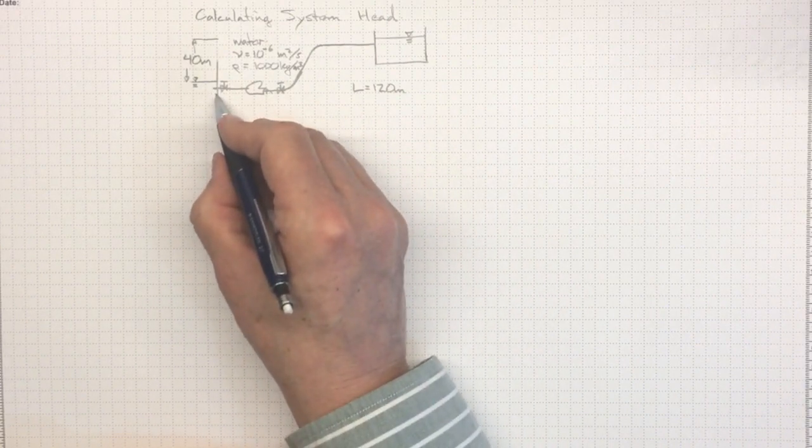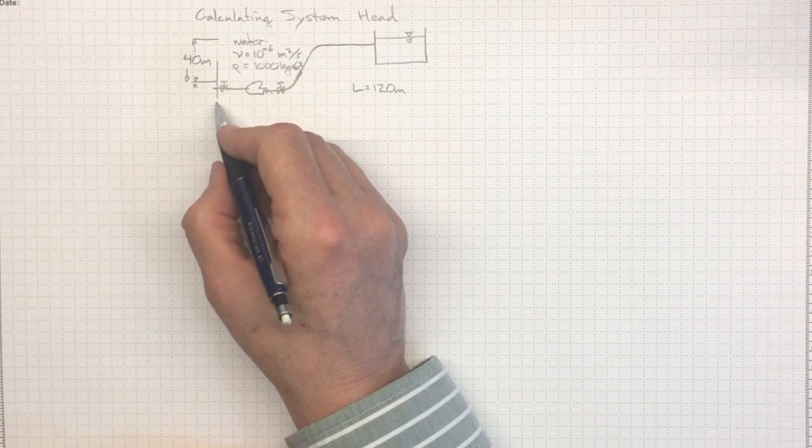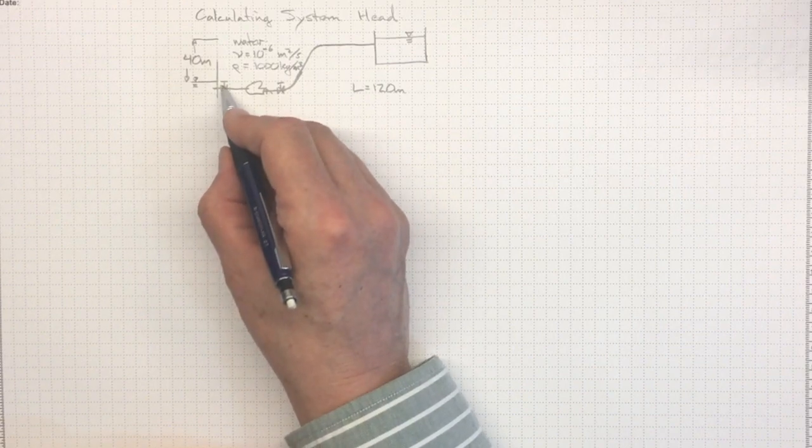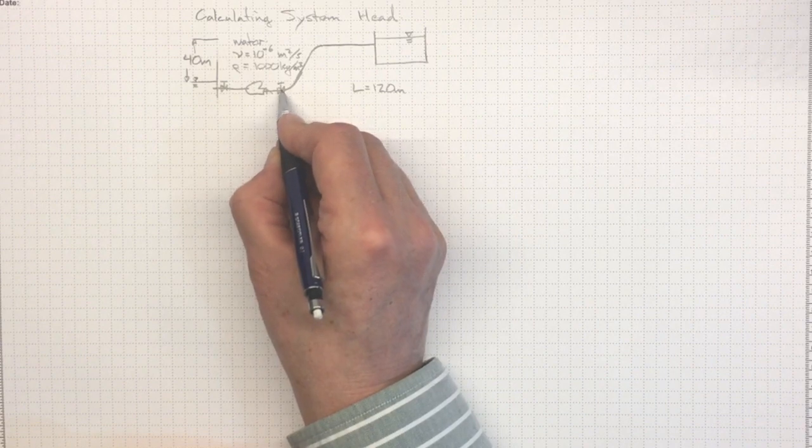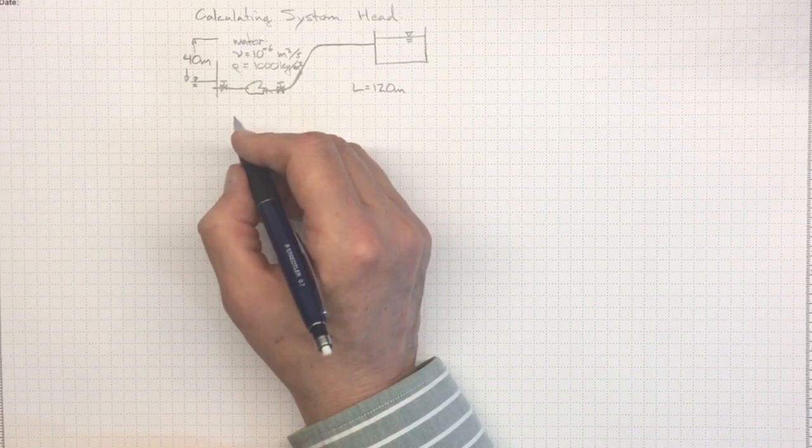When we go to solve this kind of piping system, the first thing we do is make sure that we enumerate all of the little minor loss elements in here. Because although we call them minor losses, they may actually turn out to be quite a large part of the equation.